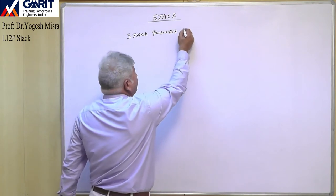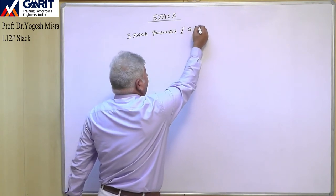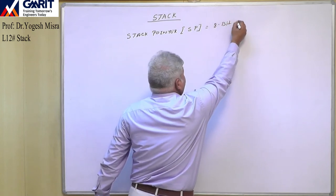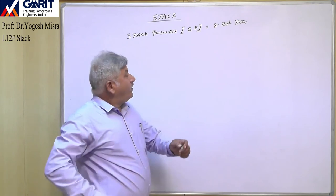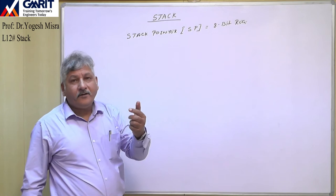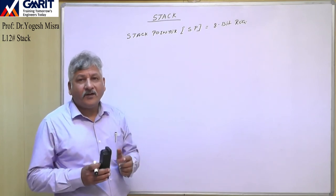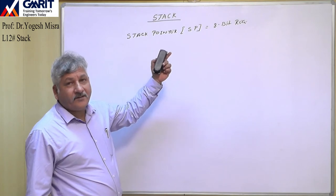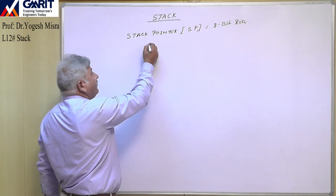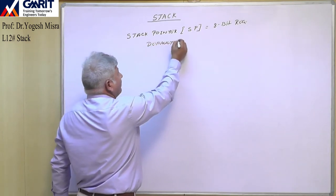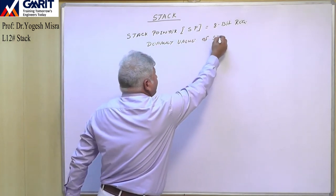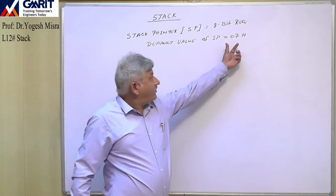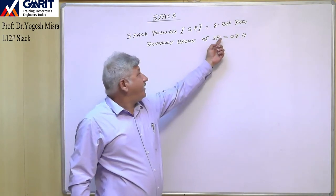The stack pointer is represented by SP and is an 8-bit register. The purpose of the stack pointer is to point to the memory location which is reserved for the stack. By default, the value of SP in the 8051 microcontroller is 07H. So 07H is the memory location of the RAM pointed by SP.